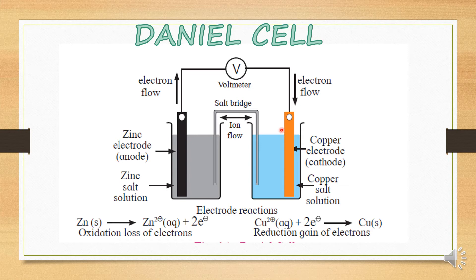This kind of cell is called an electrochemical cell, also known as the Daniel cell — the cell where electricity is generated by a redox reaction. In an electrochemical cell, electrons flow in the external circuit from anode to cathode, while conventional current flows from cathode to anode. When electron transfer happens from one electrode to another, an electrical potential is established at the two electrodes, and this is called electrode potential.